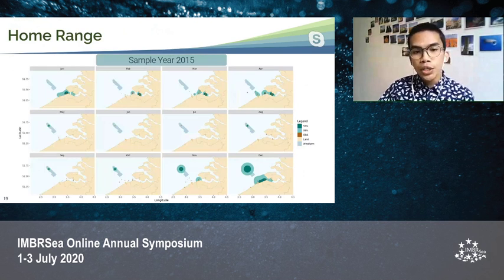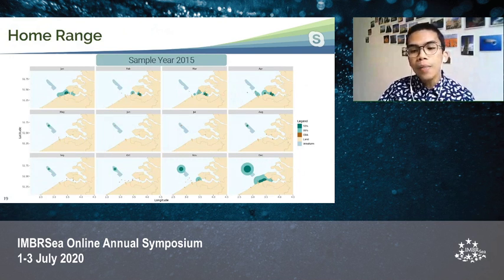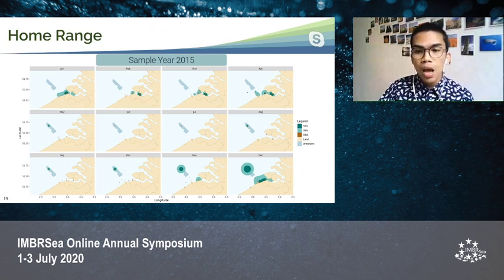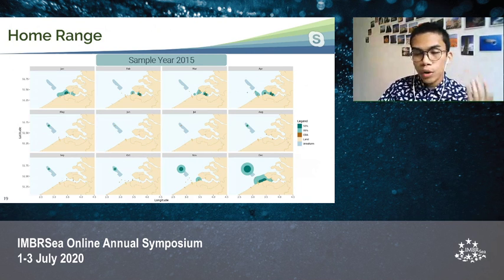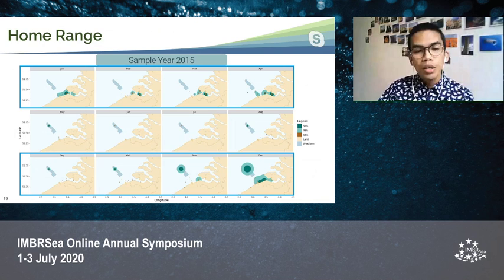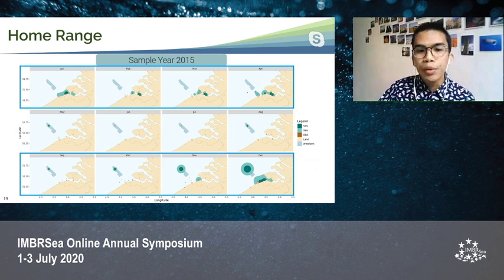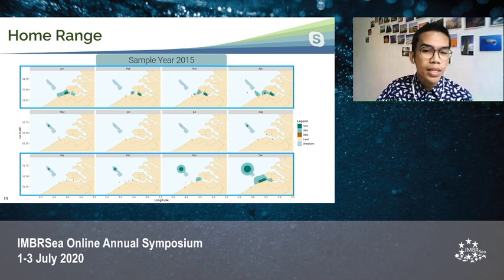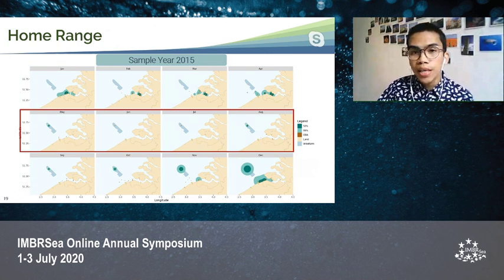In terms of home range, each panel shows the monthly home range of the animal. The dark green represents the 50% core home range, while the lighter green represents the 95% extent of the home range, and the brown dots were the center-of-activity locations of the cods. During winter, the home range includes wind turbines, the coast, and the Scheldt estuary, which complements the residency and frequenting results. During summer, the home range is restricted to wind turbines only.